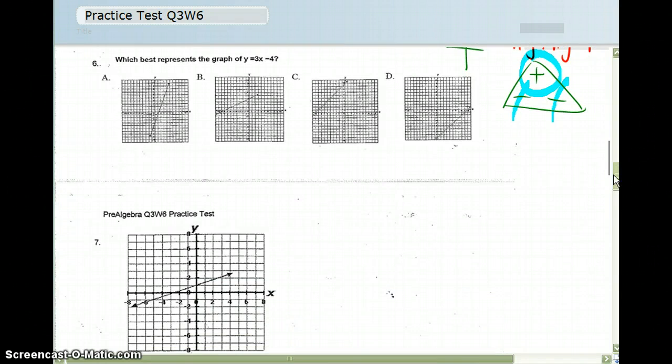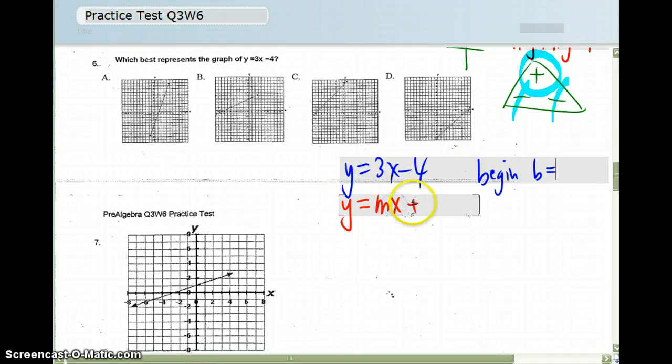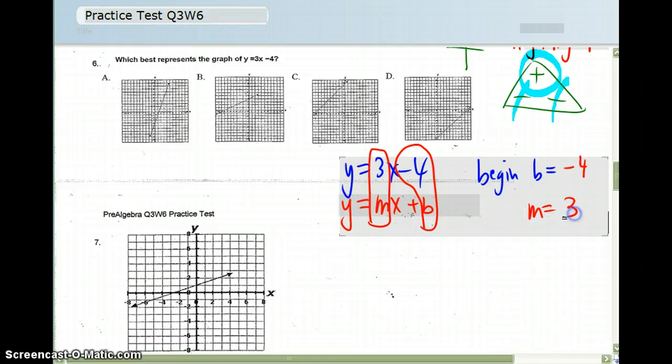Number 6, we're looking for the graph that represents y equals 3x minus 4. We always begin at the b. Remember that my equation is y equals mx plus b. So the number before the x is my m. The number after the x would be the b. If there's a negative, like the negative 4 here, I take the negative with the 4. So my b is negative 4, and here my slope later is going to be 3.